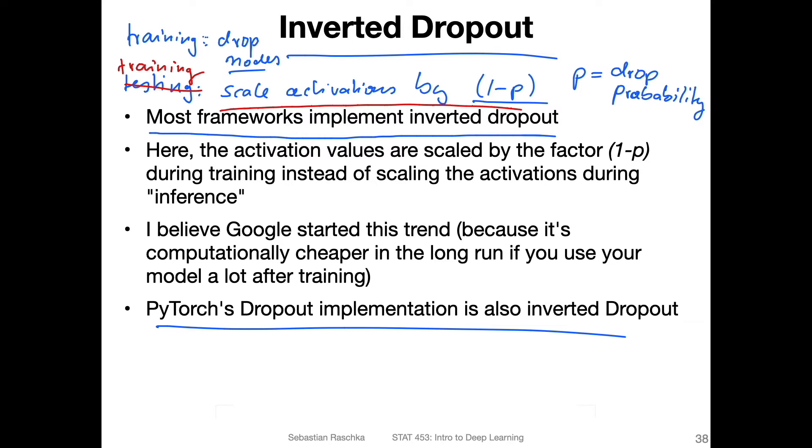So why do we do that? Why do we do the inverted dropout? I'm not 100% sure, but I believe this trend was started back in 2015 in TensorFlow, at least that was the first time I've seen it. And I think my theory is that if you have a big company, let's say like Google, you do a lot of predictions, right? You have millions or billions of people using, let's say Google search.